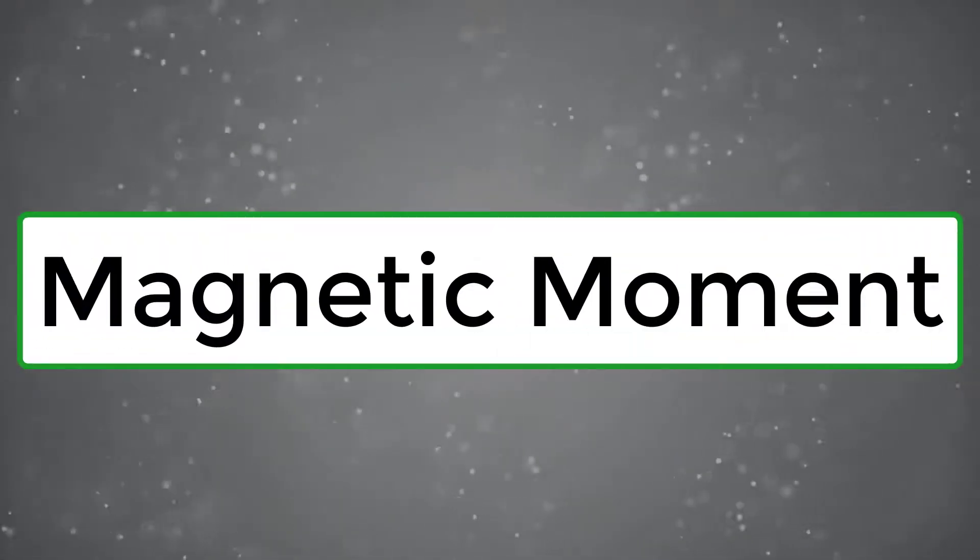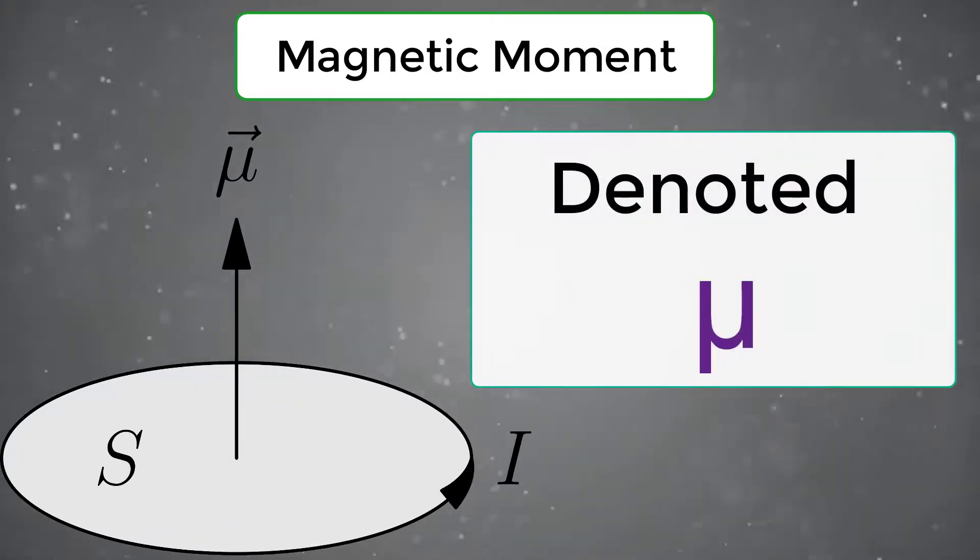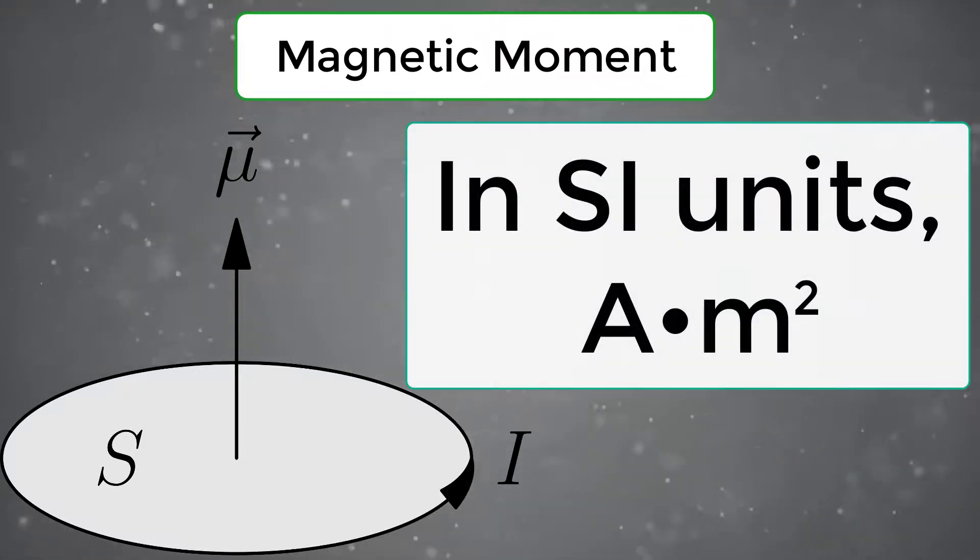Now what is a magnetic moment? A magnet's magnetic moment, also called magnetic dipole moment and usually denoted mu, is a vector that characterizes the magnet's overall magnetic properties. In SI units, the magnetic moment is specified in terms of amperes times meter squared.